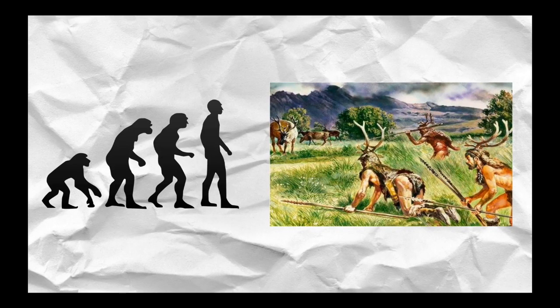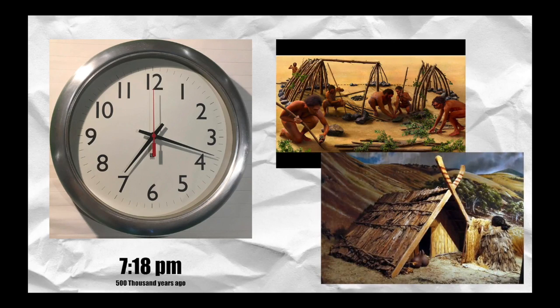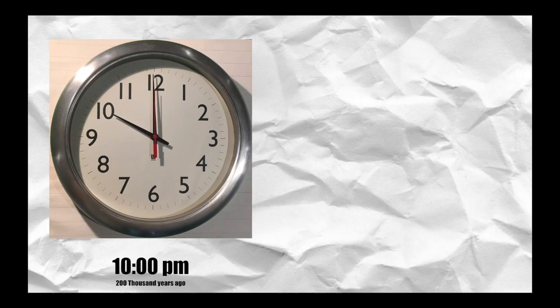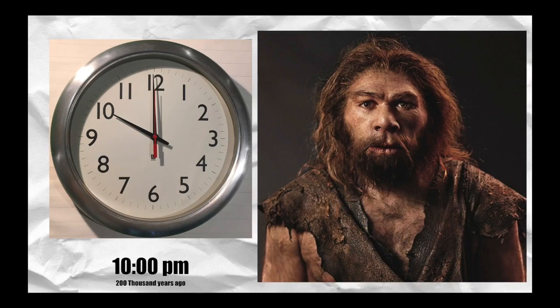The oldest constructed large-scale shelters came to be at 7:18pm, and the oldest glue were made at 10:09, 200,000 years ago. The first Homo sapiens also appeared in Africa around the same time, and it soon started to populate the world and out-competing the rest of the early humans.